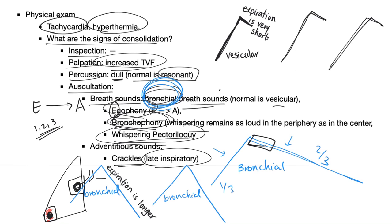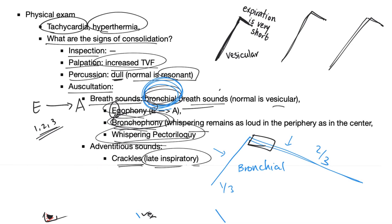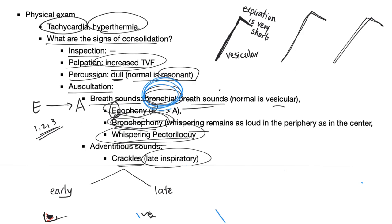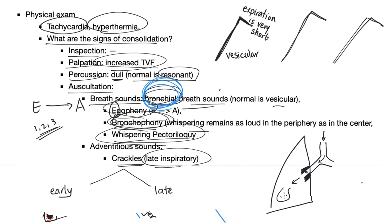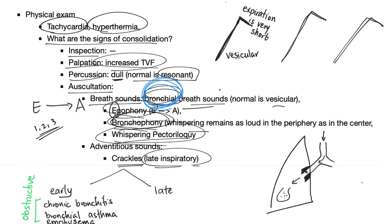In pneumonia you might find crackles, and they are late inspiratory. Crackles can be early or late. Early crackles mean the air hits a thick bronchus early during inspiration — a proximal problem. Late crackles occur when the problem is in the alveoli, because air takes time to reach the periphery. Early crackles are seen in chronic bronchitis (proximal), asthma (proximal), and emphysema (distal, but grouped here). Late crackles are more associated with restrictive lung diseases — fibrosing alveolitis, asbestosis, pneumonia, pulmonary congestion due to heart failure or pulmonary edema, pulmonary sarcoidosis, or any pulmonary fibrosis.